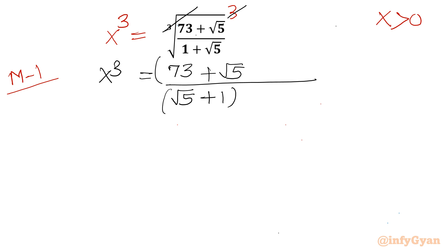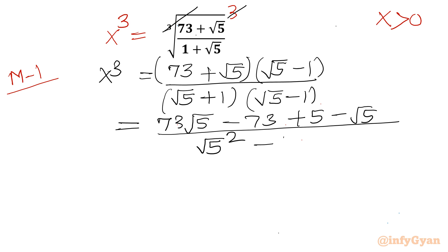Now I will rationalize the denominator. So I will multiply here with root 5 minus 1, in the numerator also. Now numerator will give us 73 root 5 minus 73 plus 5 minus root 5 divided by a plus b times a minus b, which is a square minus b square. So root 5 square minus 1 square.